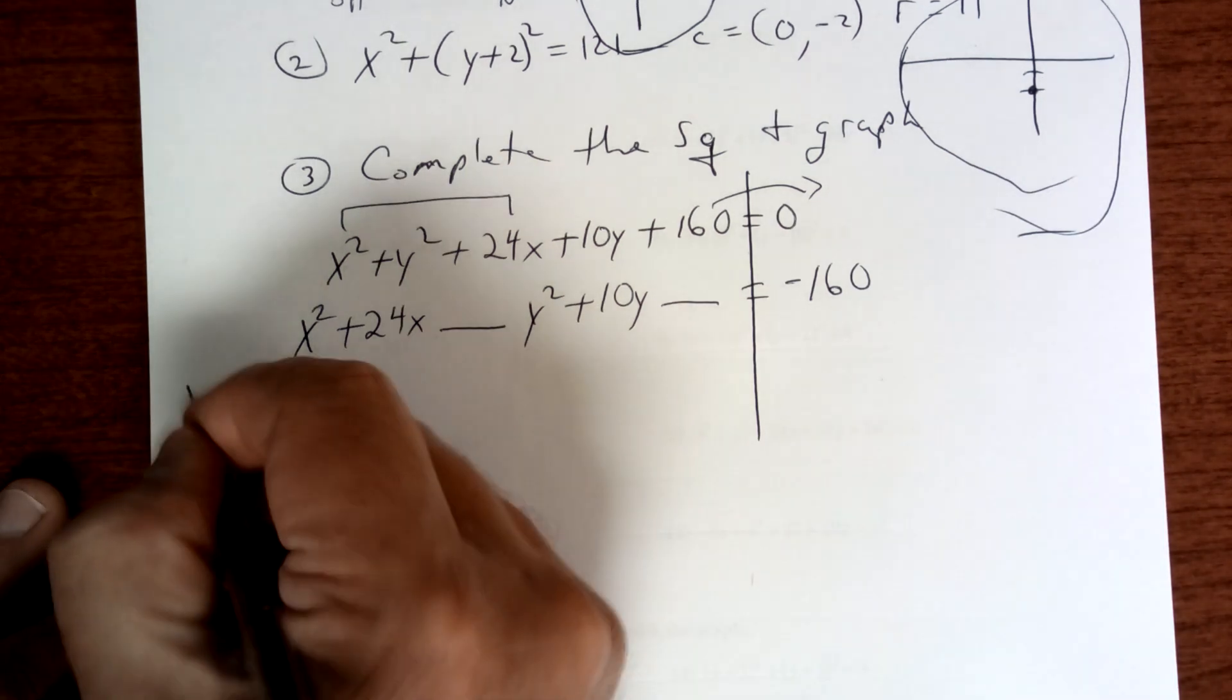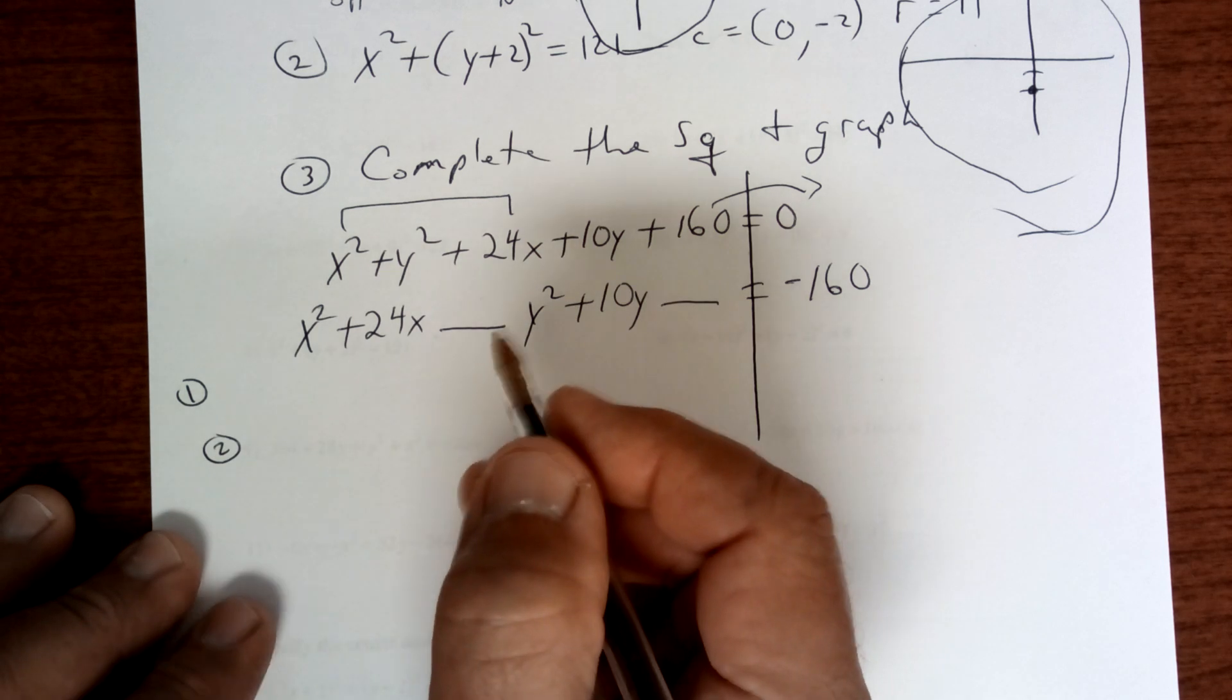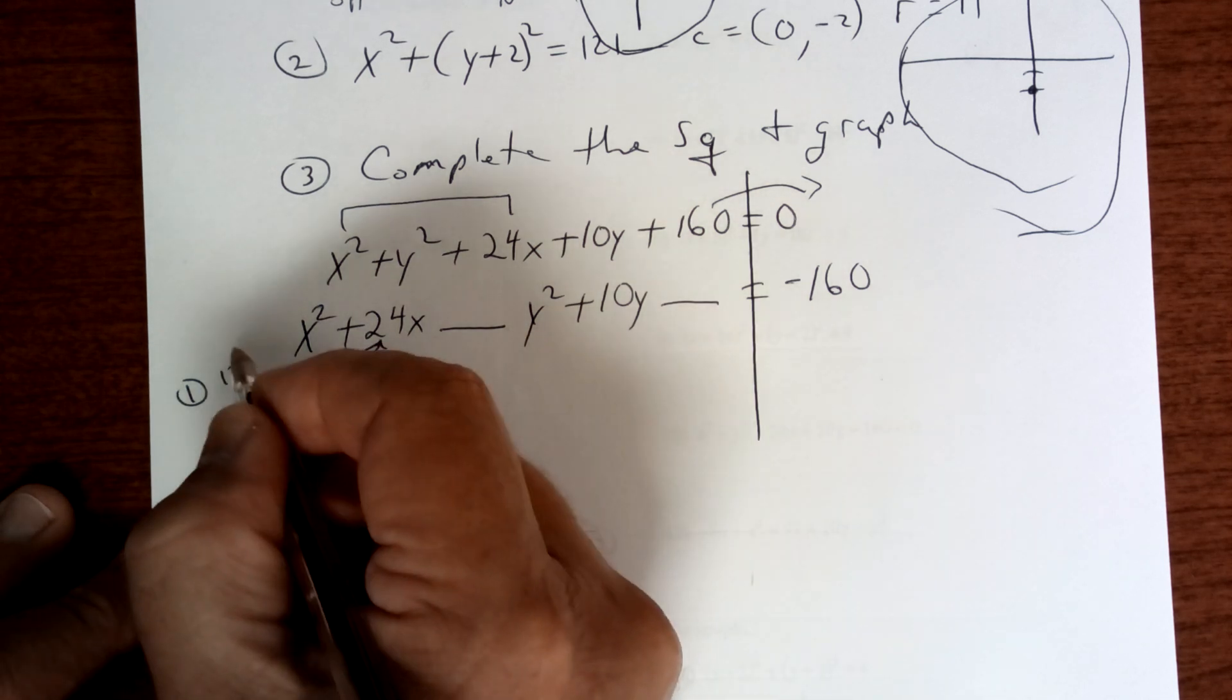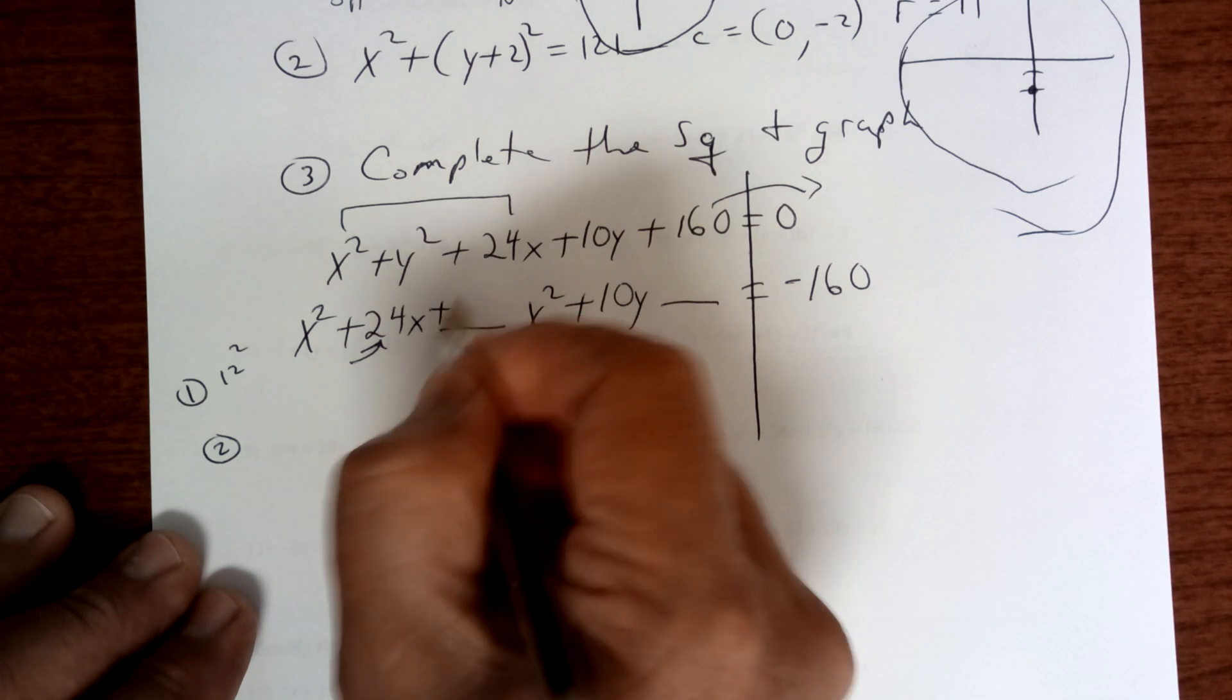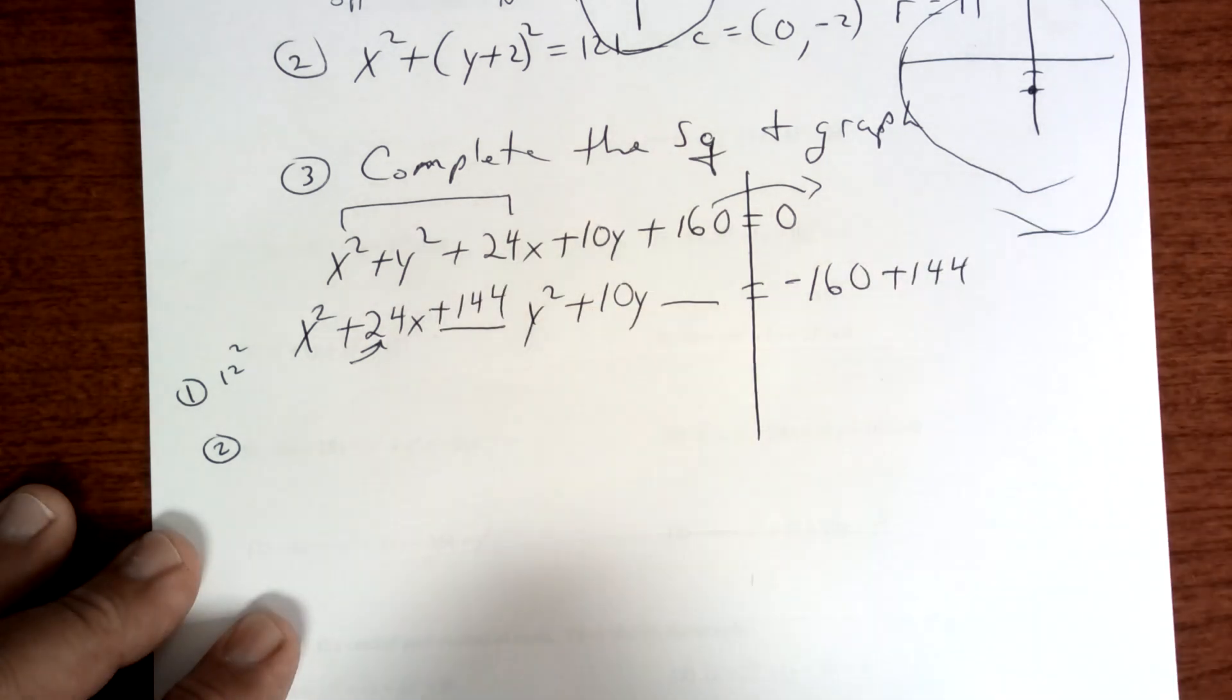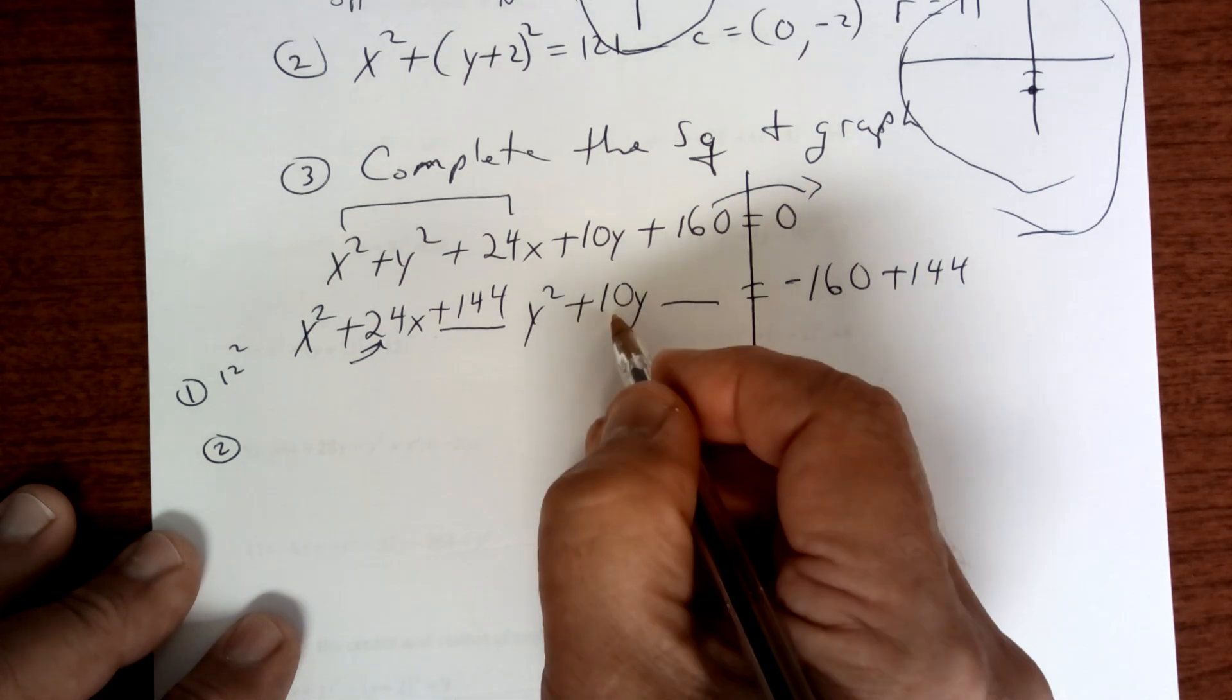Any questions so far? Remember, there's two things to complete in the square. What are they? Well, you take half of the middle term. Half of that is 12, and 12 squared is 144. So you're going to add 144 here and add 144 here.